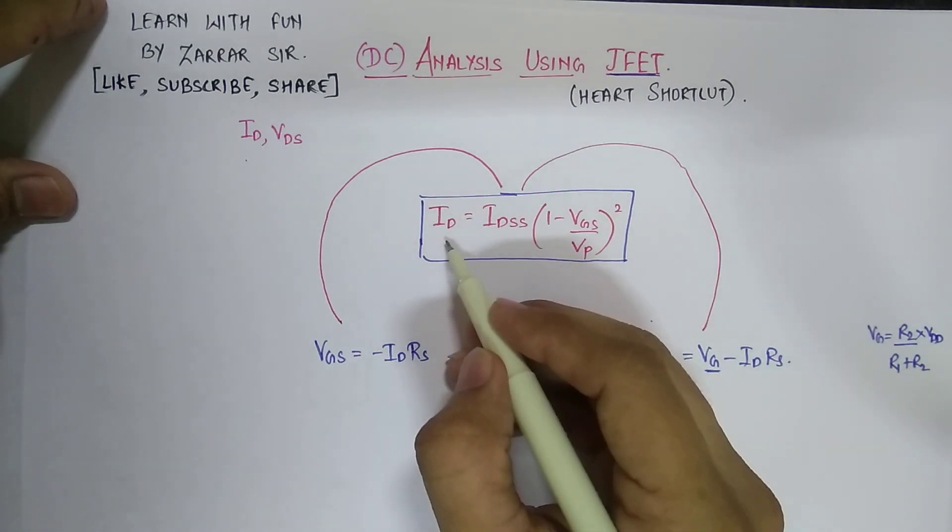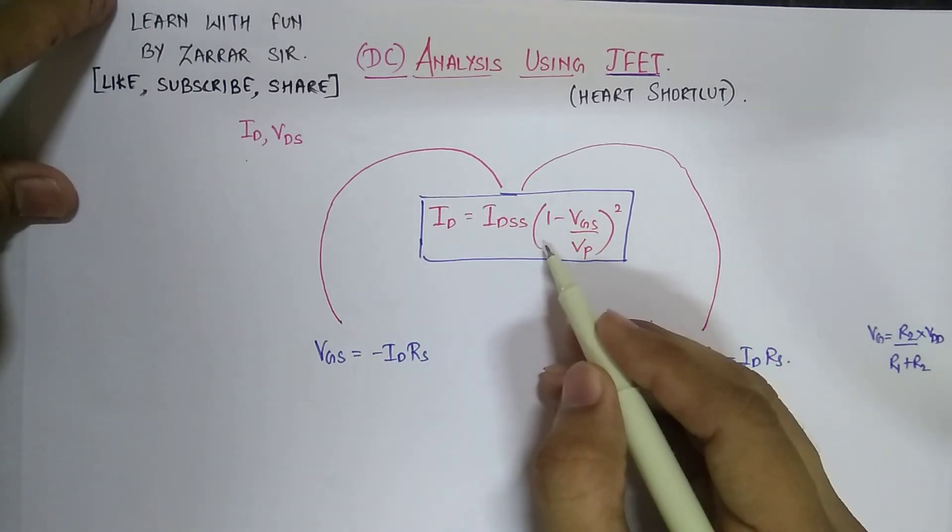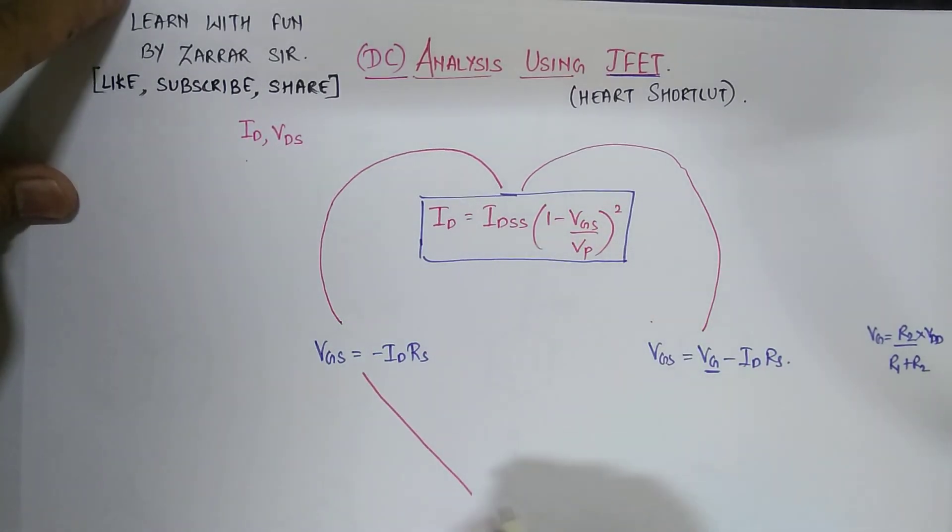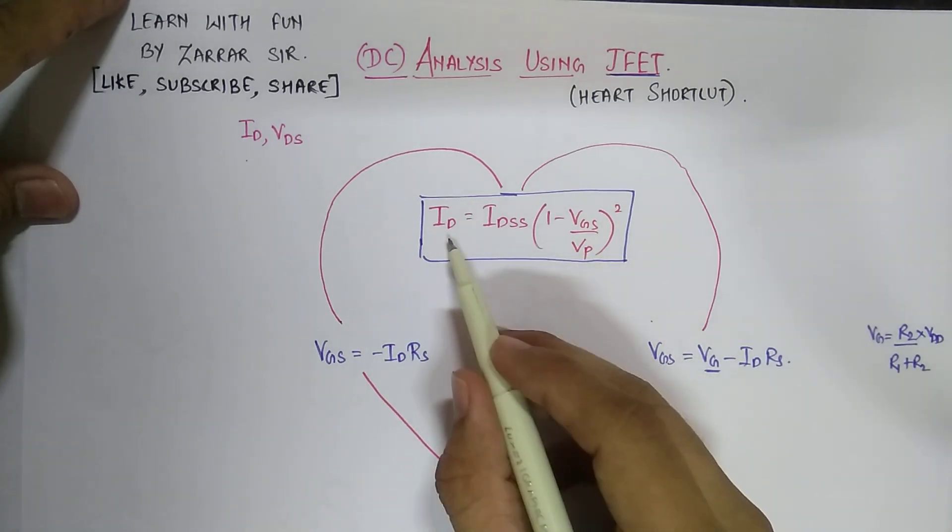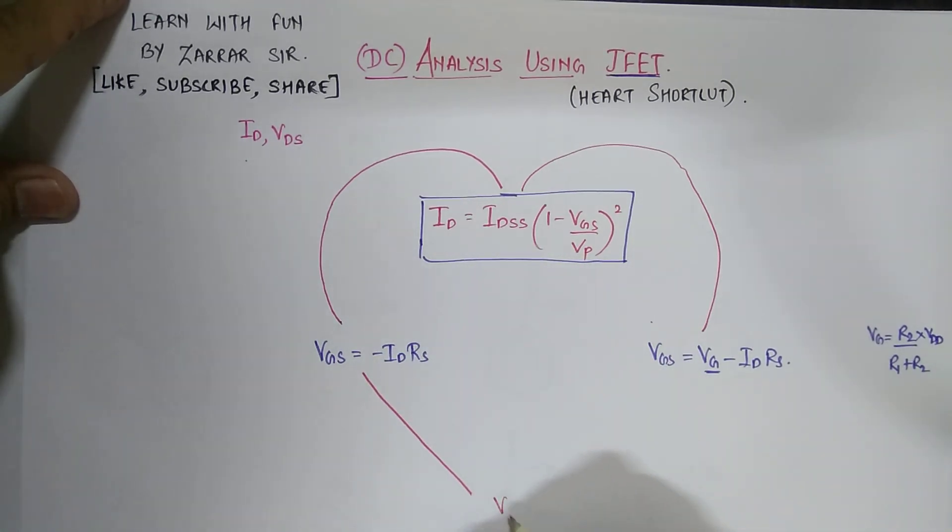And you get the equation of ID or you get the answer of ID. Once you get the ID, you will solve this equation using a calculator, and once you get the value of ID, you'll get the value of VGS.